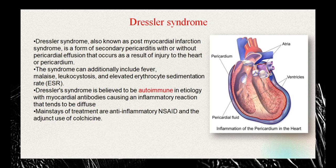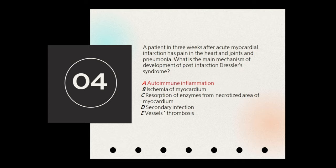The treatment of choice for Dressler syndrome is anti-inflammatory NSAIDs, and colchicine is also used alongside NSAIDs. The mechanism of development asked in the question is autoimmune inflammation.